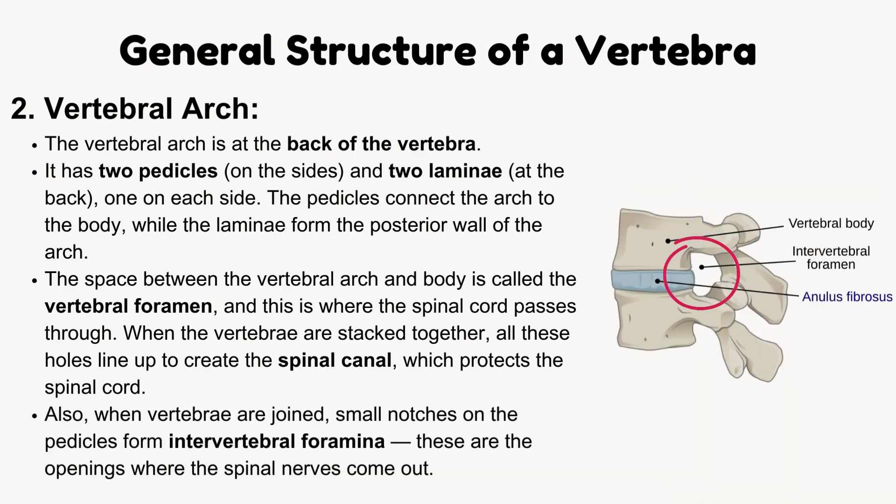Also, when vertebrae are joined, small notches on the pedicles form intervertebral foramina. These are the openings where the spinal nerves come out.